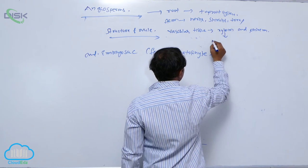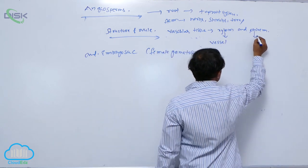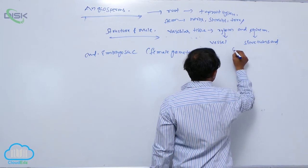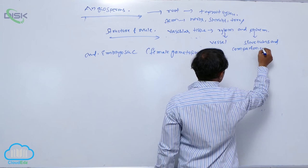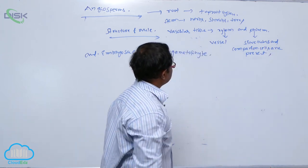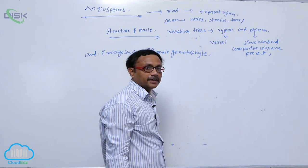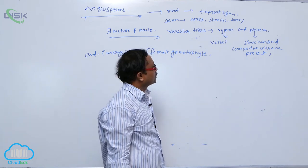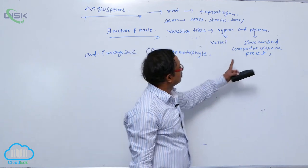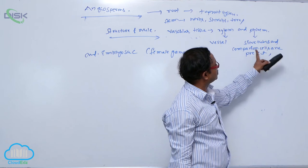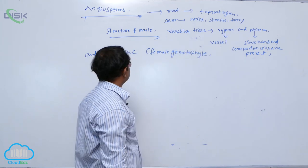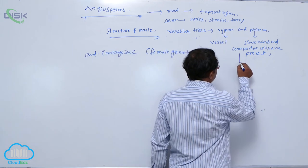In the xylem, vessels are present. In the phloem, sieve tubes and companion cells are present. Xylem is involved in the conduction of water and minerals. Phloem is involved in the conduction of food material. In angiosperms, sieve tubes along with companion cells belong to the phloem. Conduction of water and minerals takes place through the xylem vessels. Secondary growth is also present.